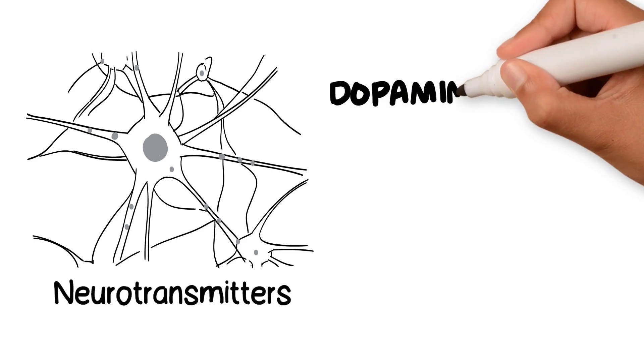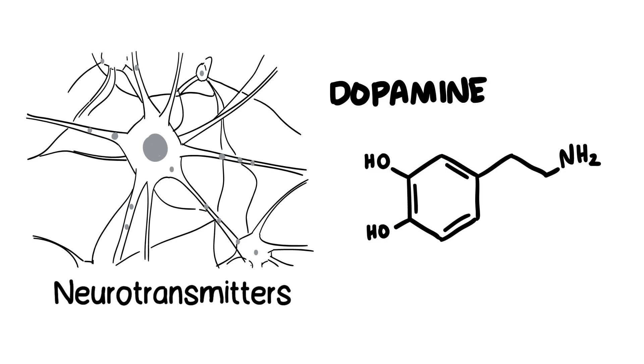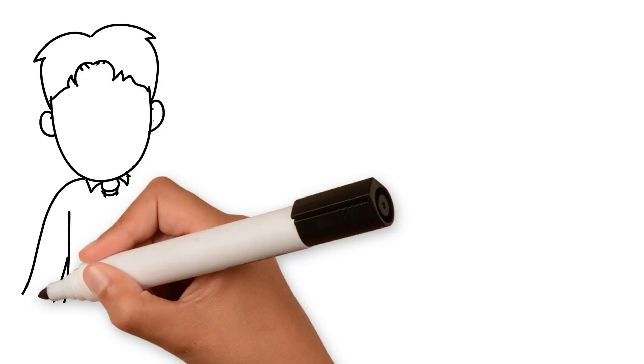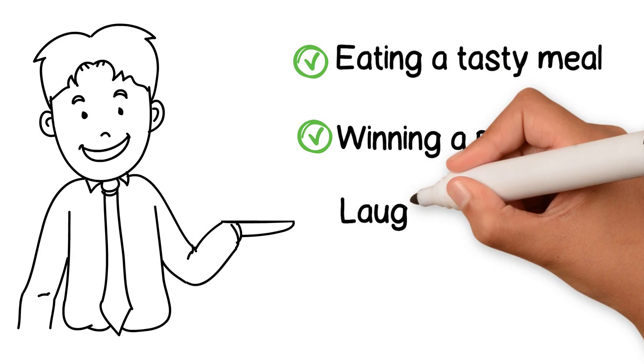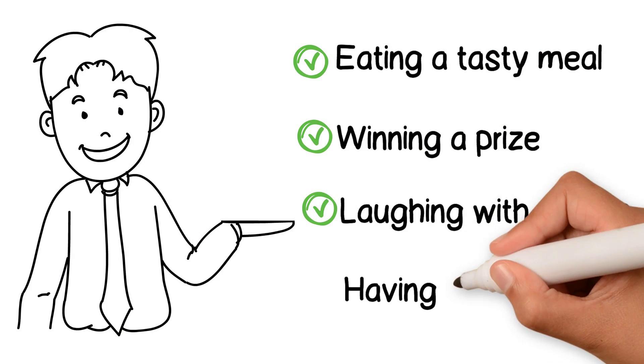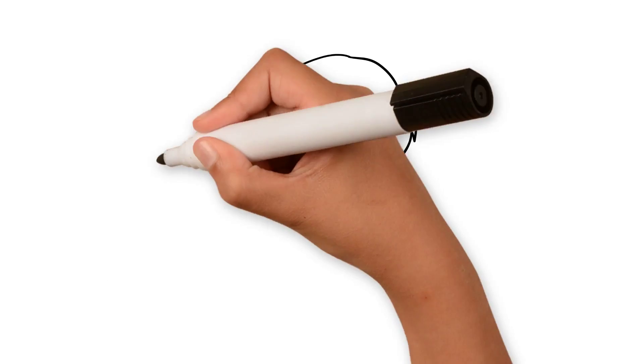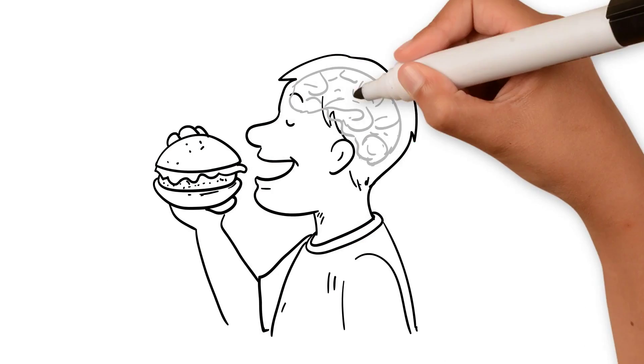One of the most important neurotransmitters in the brain is called dopamine. Think of a pleasurable activity: eating a tasty meal, winning a prize, laughing with friends, or having sex. All of these activities cause your dopamine levels to surge.